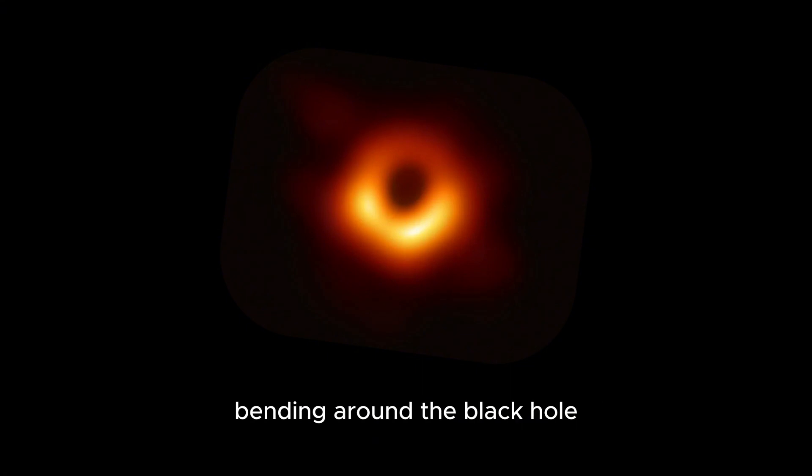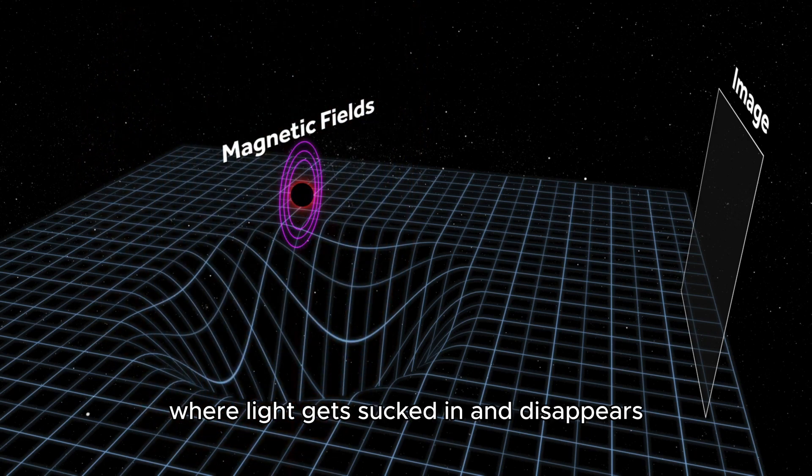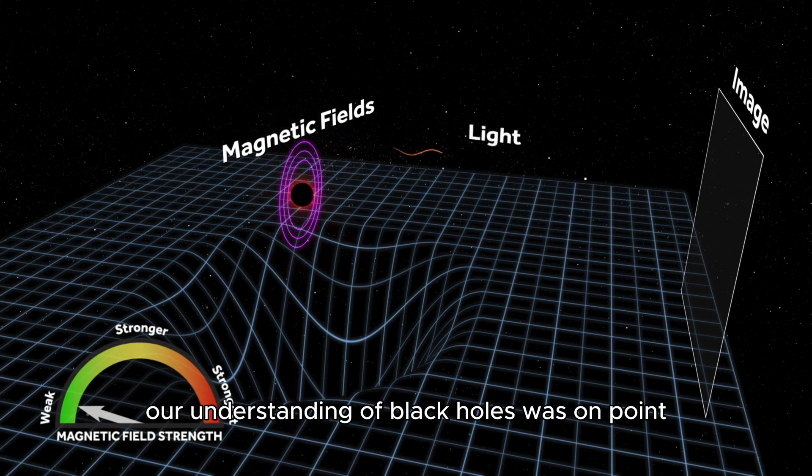That bright ring you're seeing is light bending around the black hole. The black center? That's the black hole's shadow, where light gets sucked in and disappears. This image wasn't just historic - it proved that our understanding of black holes was on point.